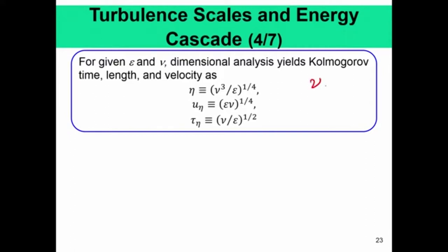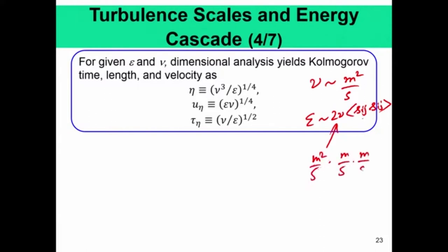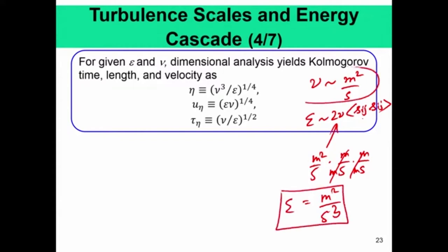By dimensional analysis, kinematic viscosity nu has dimensions of meter squared per second — essentially the same dimension as diffusivity — whereas epsilon has units of meter squared per second cubed. The Kolmogorov length scale eta can only be formed as (nu^3 / epsilon)^(1/4), the Kolmogorov velocity scale u_eta as (epsilon * nu)^(1/4), and the Kolmogorov time scale tau_eta as (nu / epsilon)^(1/2). These are the different scales of turbulence — eta, u_eta, and tau_eta — and they are essentially universal in nature, which is what Kolmogorov claimed and which turns out to be true.